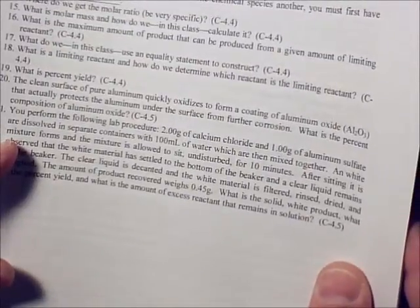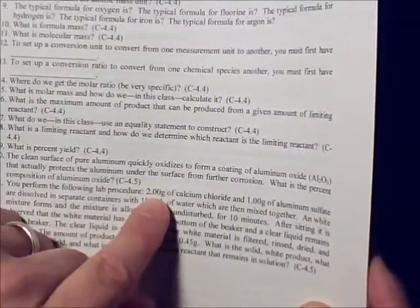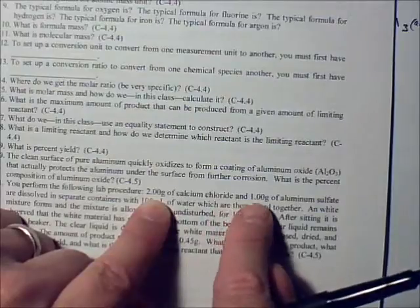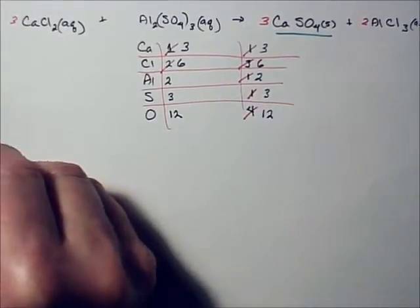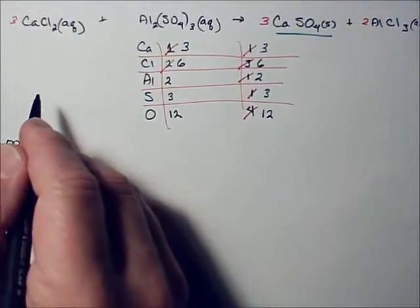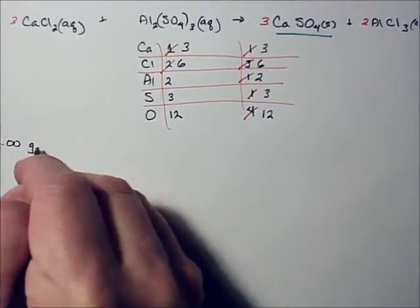Alright, now to do the stoichiometry, we've got to look back at the problem and find the amounts of our reactants. The amounts of reactants are two grams of calcium chloride and one gram of aluminum sulfate. So two grams of calcium chloride.